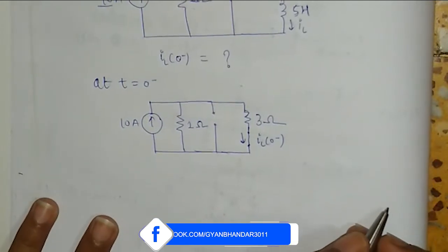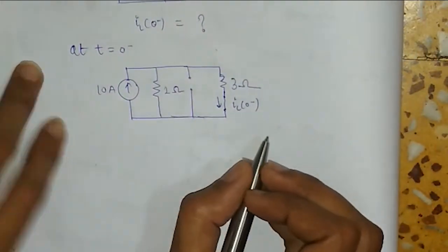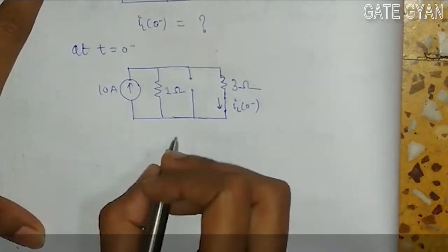So, to get iL(0-), I will simply apply current divider rule.